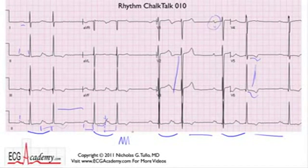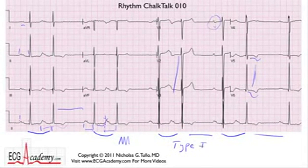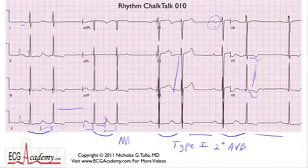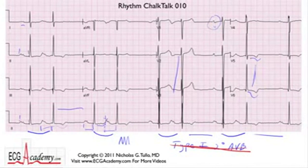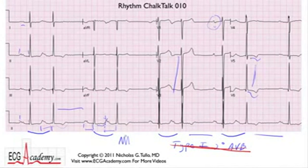This is probably Type 1 or Type 2? Type 1 second degree AV block. Well, if you said that, you are wrong. Fooled ya. So why isn't this Type 1 second degree AV block? Clearly the PR is getting longer and you've got group beating.